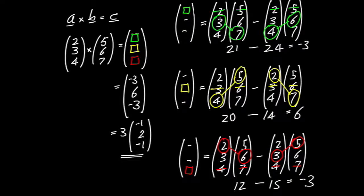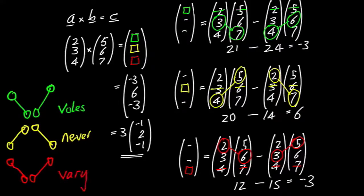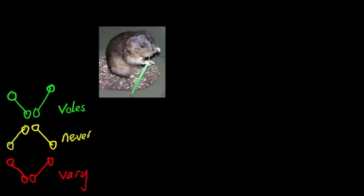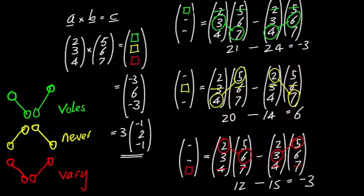Notice the pattern for the cross product components: it's the falling diagonal minus the rising diagonal for the first component — that's a V shape. Then the rising diagonal minus the falling diagonal for the second — that's an N shape. And the final is back to V again: falling minus rising. I like to remember this as 'voles never vary' — VNV — because voles don't vary very much. The important thing is the first is the falling diagonal minus rising, and it alternates.